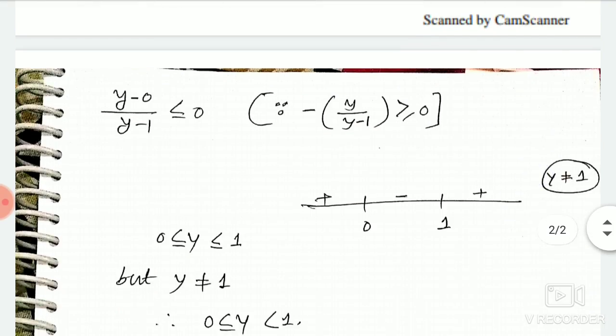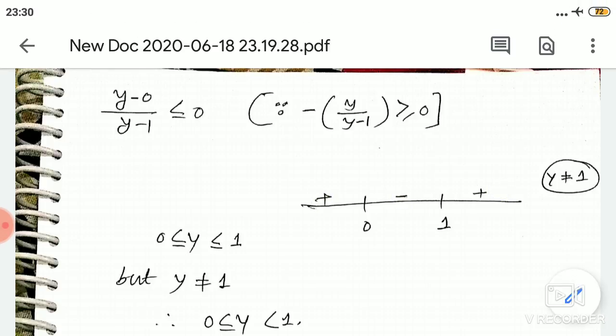Now its roots are 0 and 1. So plus minus plus. Okay? Because if we take any values greater than 1, it will be positive. And if we take any value between 0 and 1, suppose half, this will be negative, this will be positive. So it will be negative.